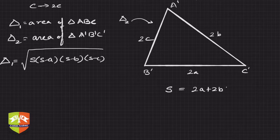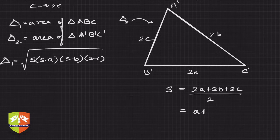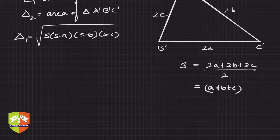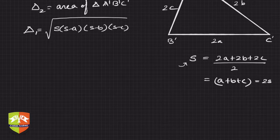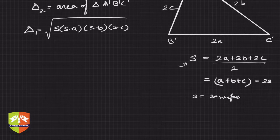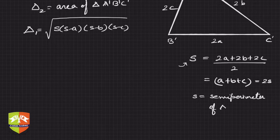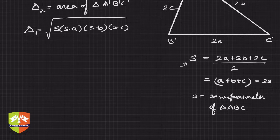For the new triangle, let the semi-perimeter be capital S. So capital S equals (2a + 2b + 2c) / 2, which equals a + b + c. Since small s is the semi-perimeter of triangle ABC, we get the first important relation: capital S equals 2 times small s.